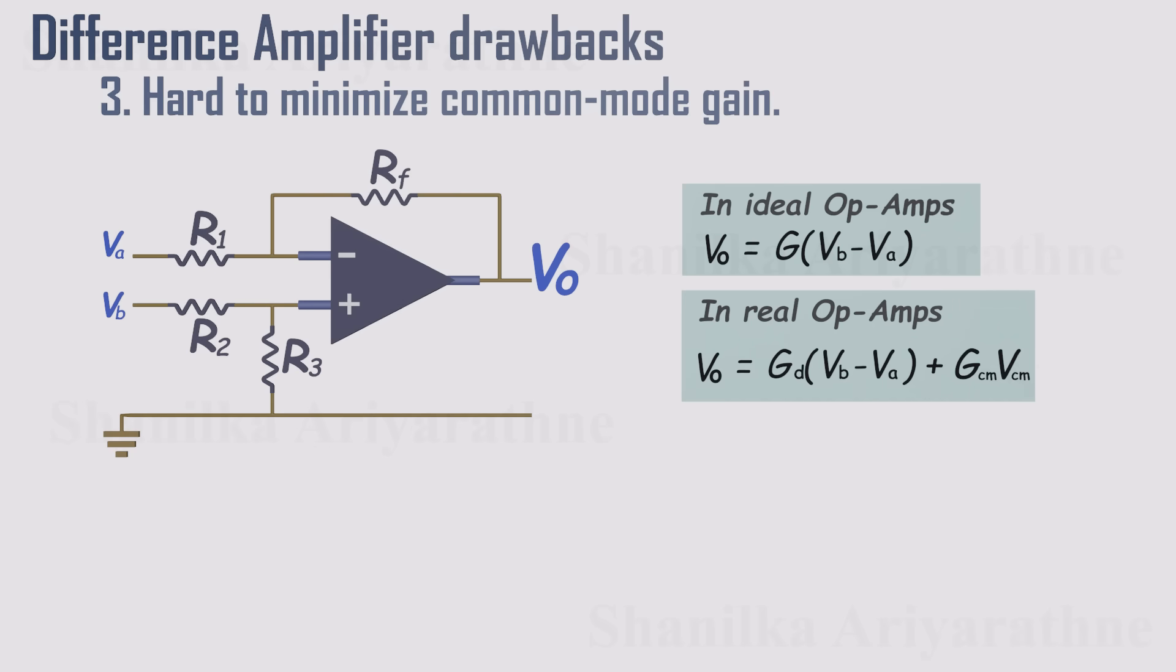But in reality, op-amps aren't perfect. Any voltage that appears equally on both inputs, called the common mode voltage, sneaks into the output as an unwanted error. This is what we call the common mode effect.